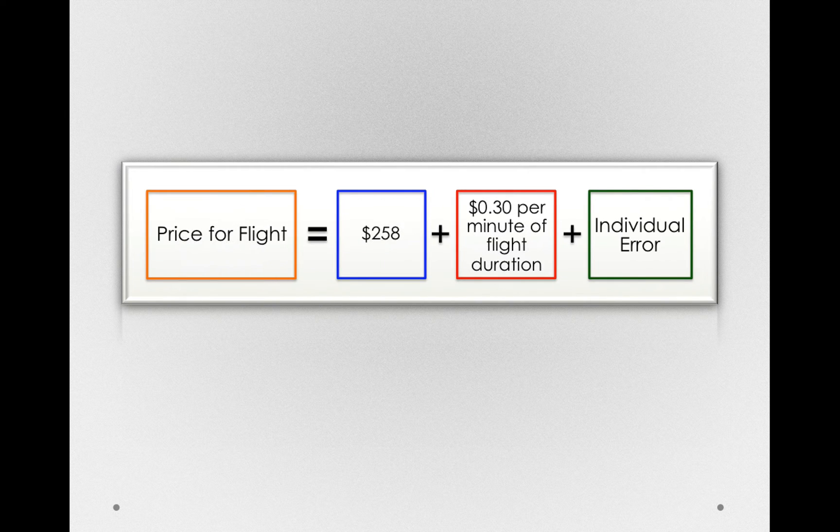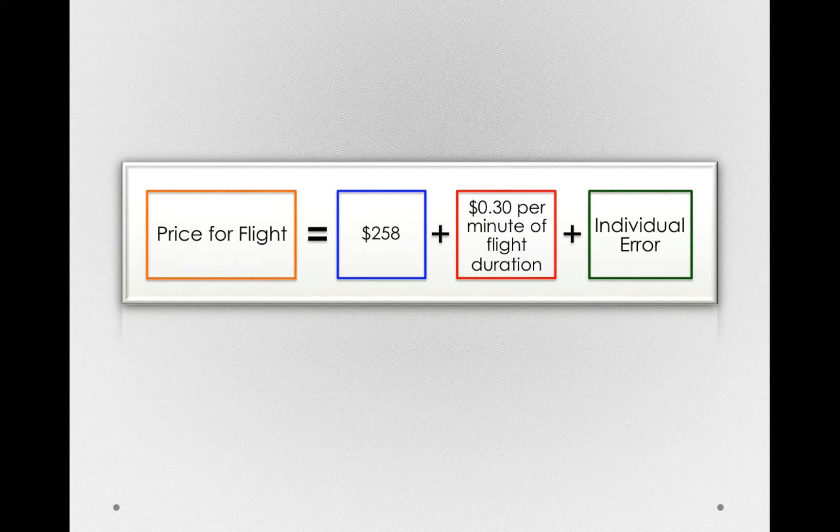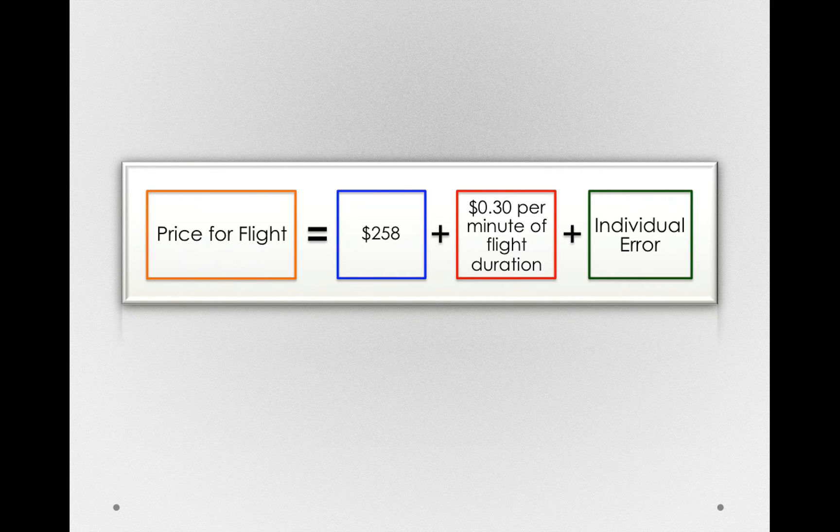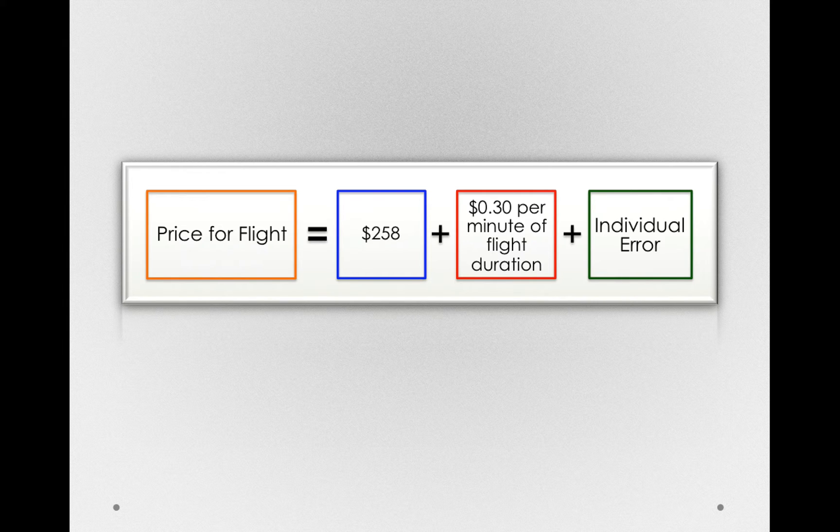Let's put this into our mathematical model and see what we mean. In this case, price of flight in that particular scatterplot is $258, some baseline (and we'll talk about what that means), plus 30 cents for each minute of the flight, plus individual error.